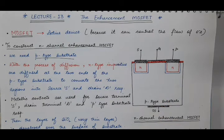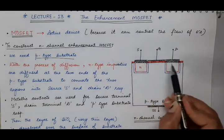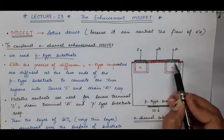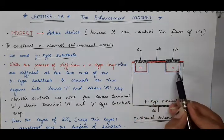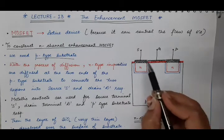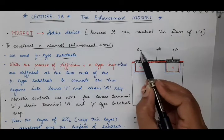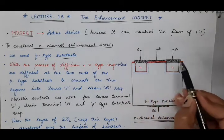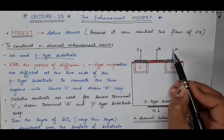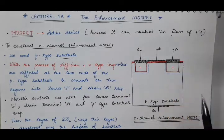For the contacts, metallic contacts are developed over these two N-type regions, out of which one terminal will act as the source terminal and the other metallic contact will act as the drain terminal.